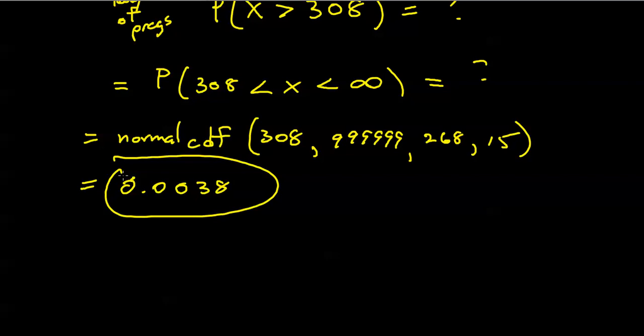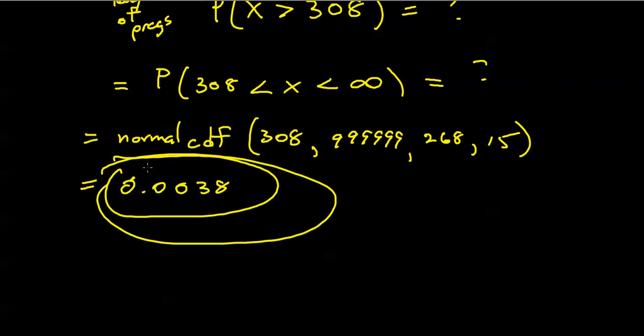The probability that a randomly selected pregnancy would last 308 days or more is 0.0038. The book asks what the result suggests. The baby has a father, but this number suggests those persons are not the same — roughly 4 out of 1,000 times might you have a pregnancy that lasts this long.